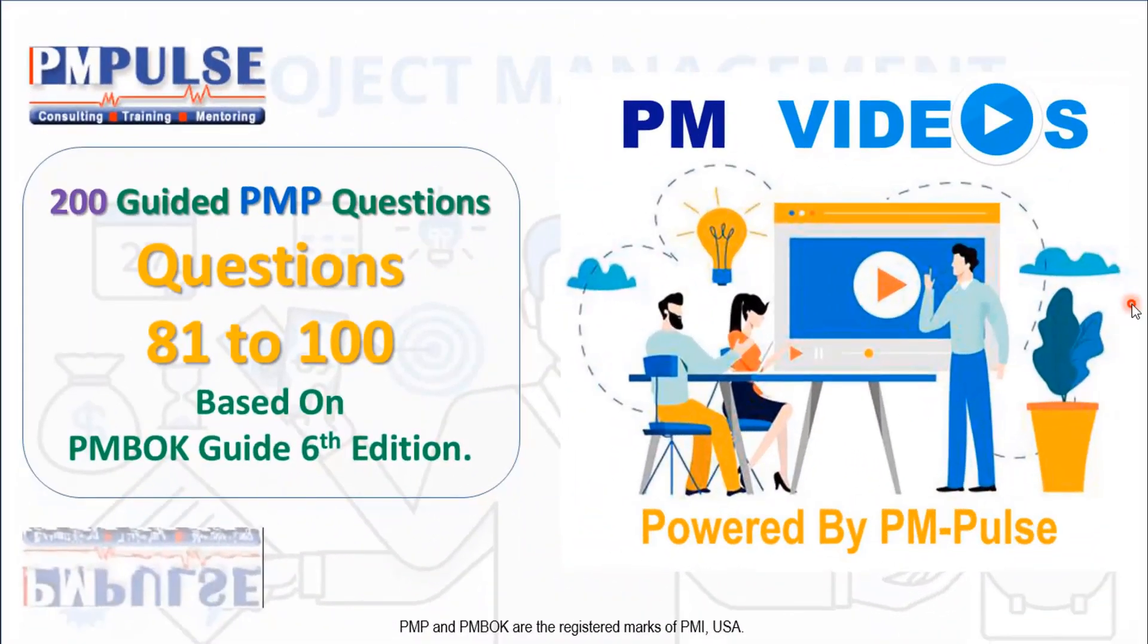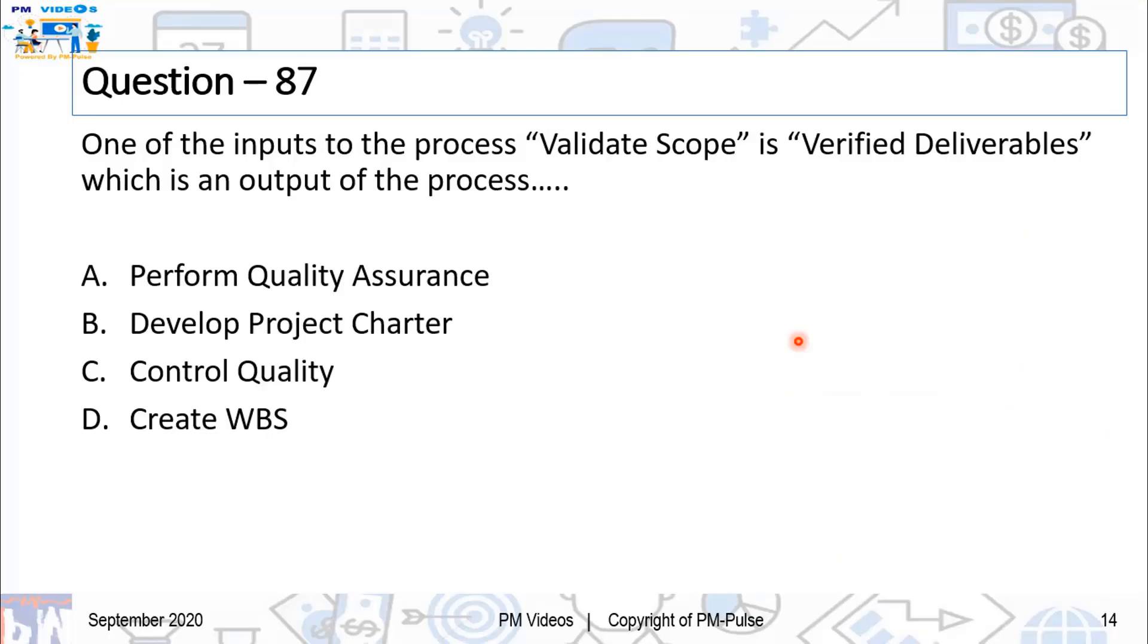This set is only to make sure that you've revised very well. Yes, some of these questions do show up on the PMP exams. They're very similar, but most of the questions are moderate. I wouldn't say very simple, but they are moderate. All right. Welcome back to the 200 guided PMP questions set 1. Moving on to question number 87.